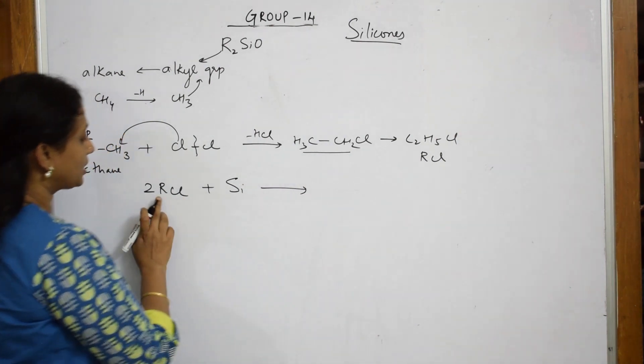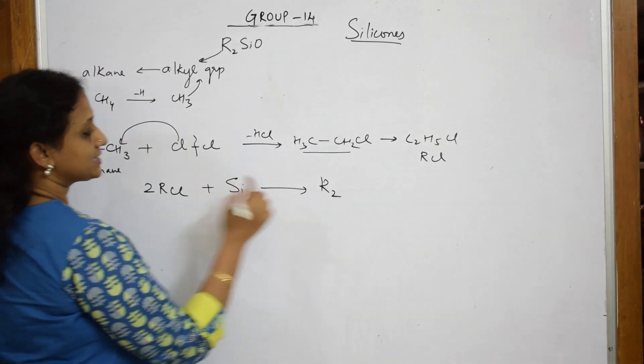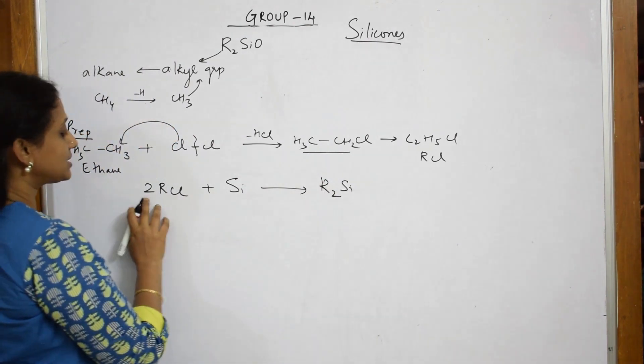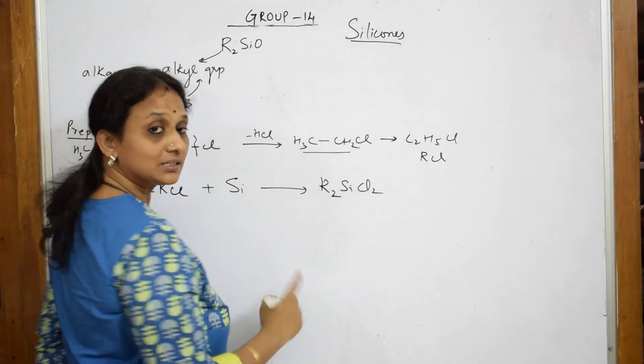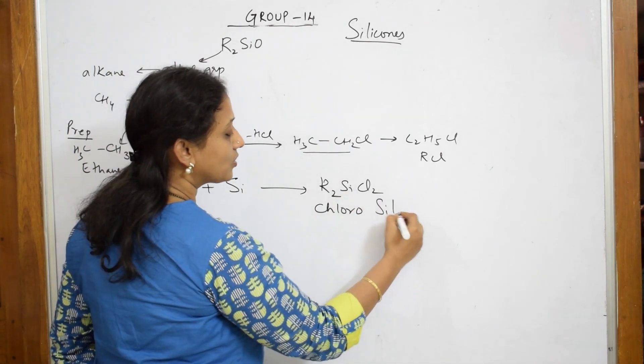So, what product does it form? Now, R is 2, so it becomes R2Si. How many chlorines are there? Cl2. This is called chlorosilane or chlorosilanes.